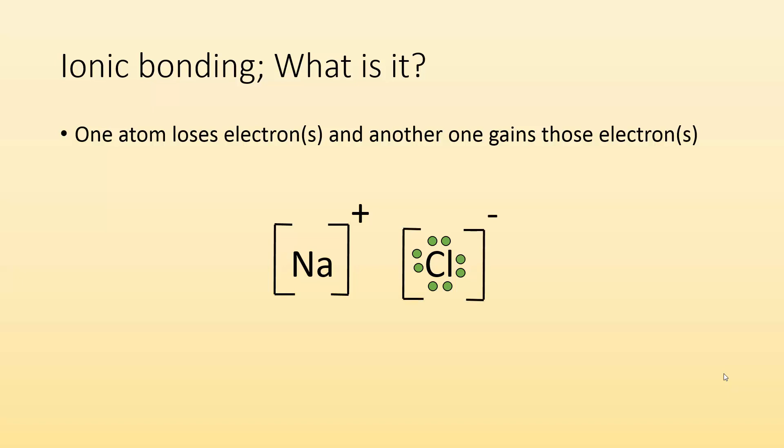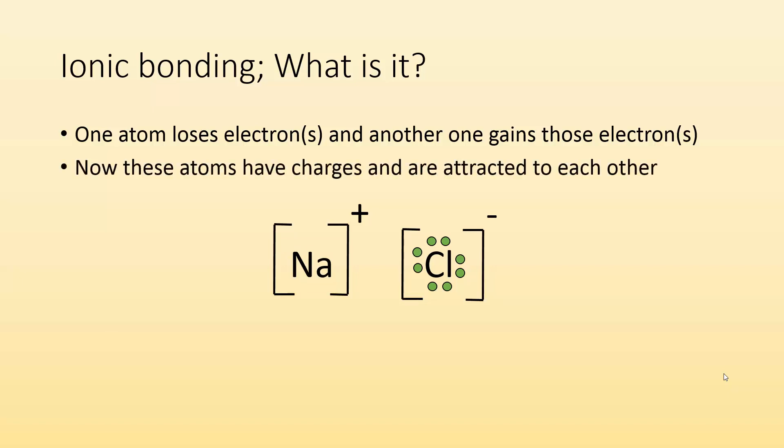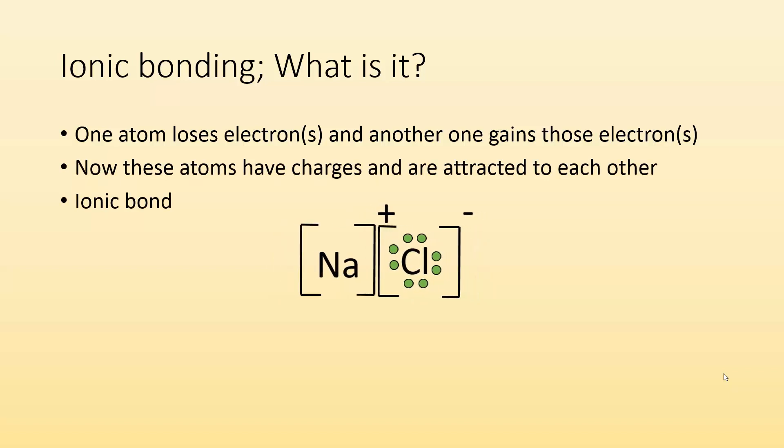So what's going to happen now is, hey, I've made these ions and now they're oppositely charged. So they're going to be very attracted to each other. So now they're going to form that ionic bond right there. They're going to become attractive. They're going to pull in closer and they're going to hold on to each other like opposite ends of a magnet.